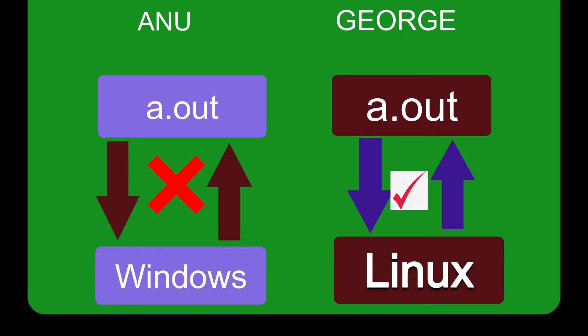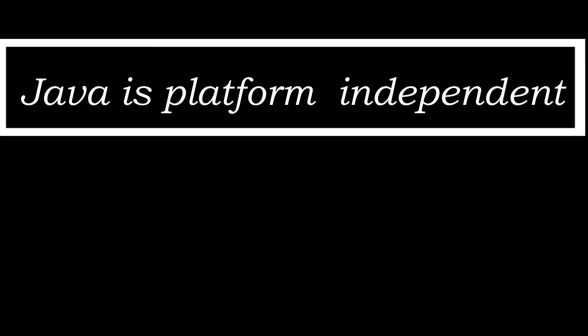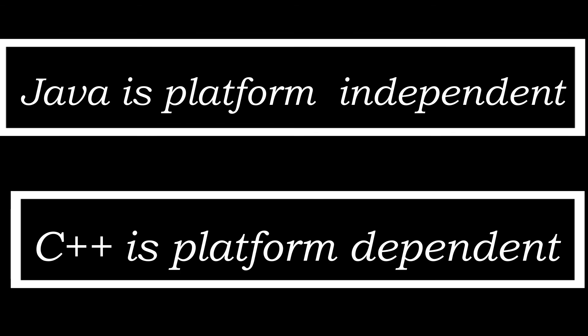It is called Java. It is platform independent. It is very simple to say that. If you are developing a program, it will work on any platform, any operating system. It will be one program. If you are developing in C++, you develop a new program in Windows and a new program in Linux. In Java, the platform is independent — one program will work on any platform. C++ is platform dependent. Thank you.